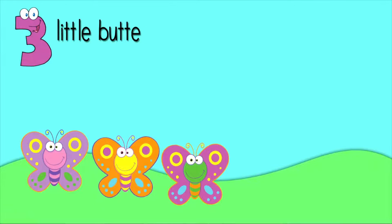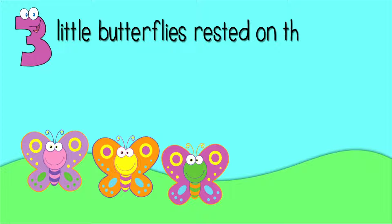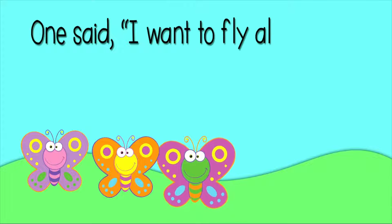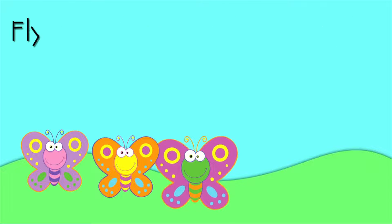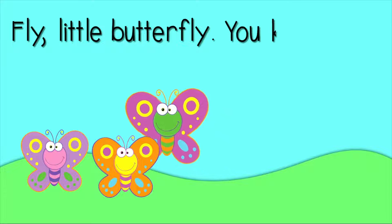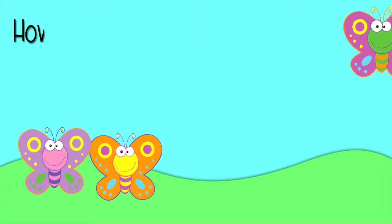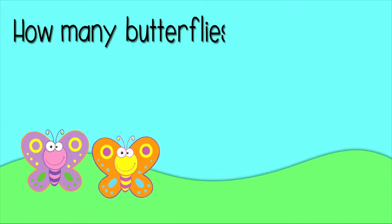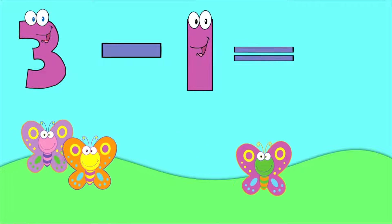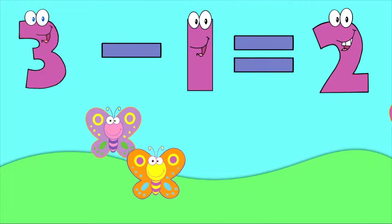Three little butterflies rested on the ground. One said, I want to fly all around. Fly, little butterfly, you know how. How many butterflies are left now? Three butterflies minus one butterfly equals two butterflies.